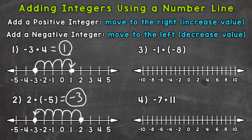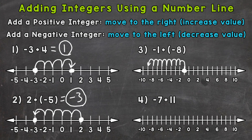On to number three, where we have negative one plus negative eight — two negative numbers. We are adding a negative integer, so we are going to decrease in value, which means moving to the left on the number line. We start at negative one. The number line only has even numbers filled in because it was too jammed otherwise, so negative one is between zero and negative two. We move to the left eight spots: one, two, three, four, five, six, seven, and eight. We end up at negative nine. So negative one plus negative eight equals negative nine.